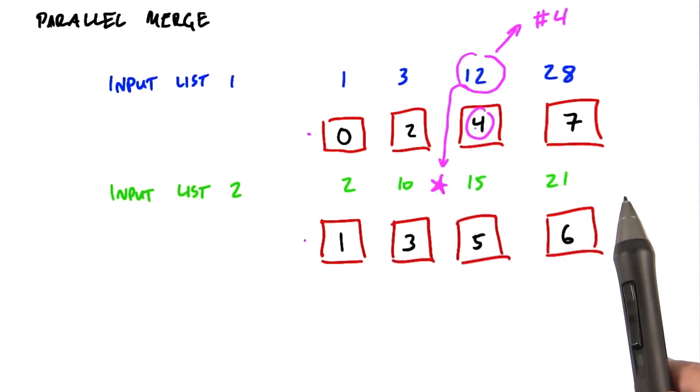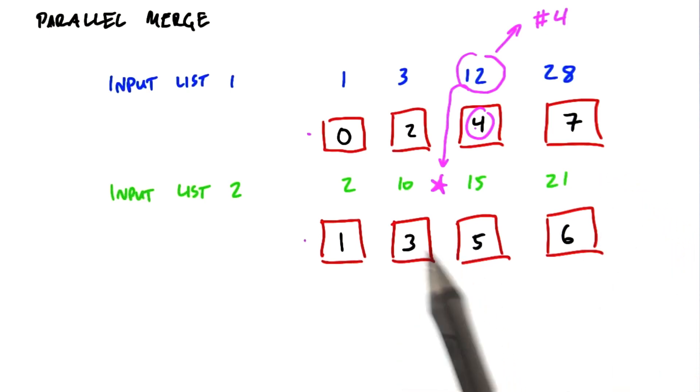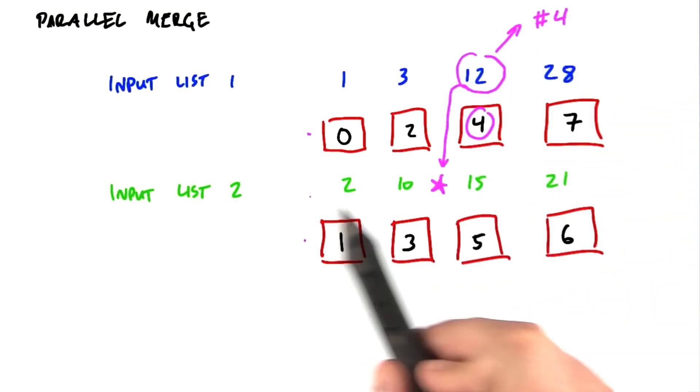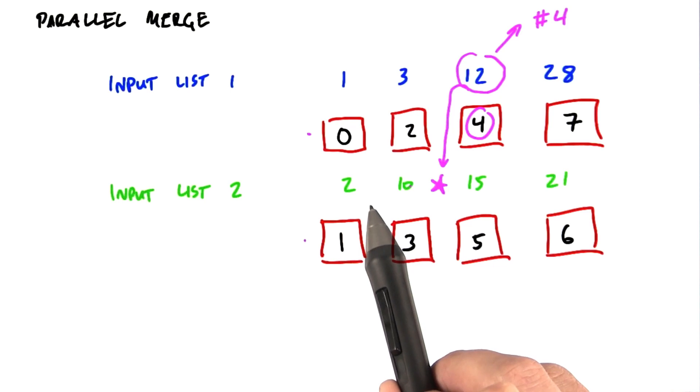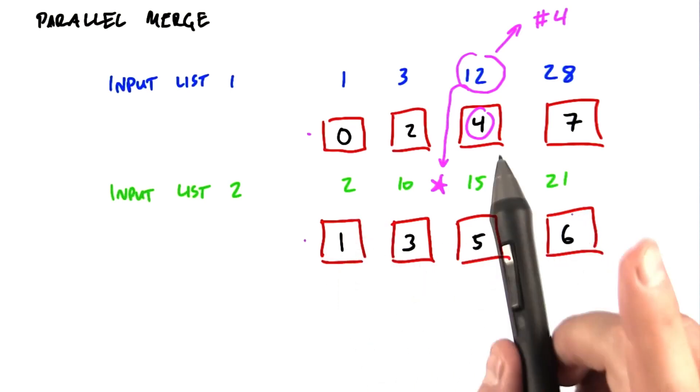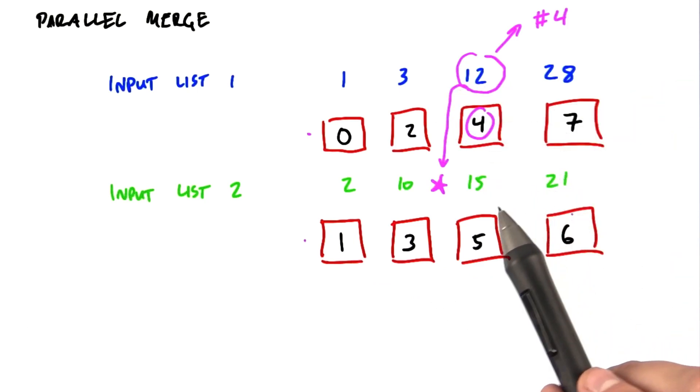So how do we know our position in the other list? That's a little bit more complex. What we need to do to make this work is to do a binary search in the other list. So this element will look in the other list, move down as a binary search, until it finds out where it's going to belong in the other list.